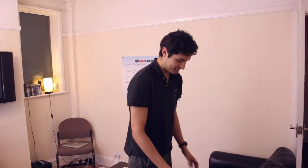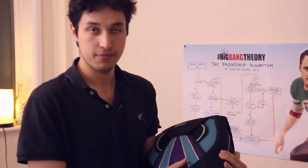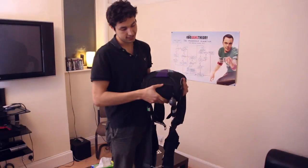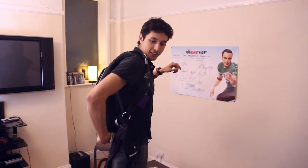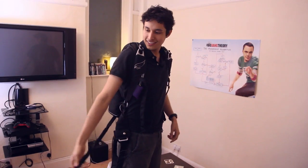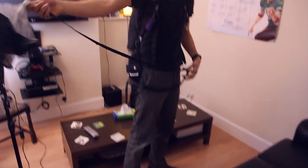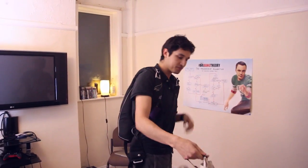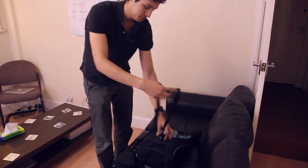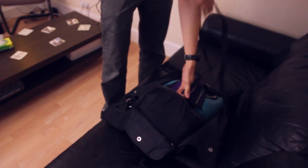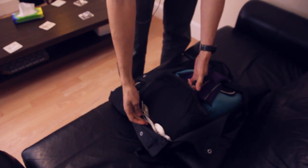So this is a skydiving rig. This is where the main parachute is and this is what's called the pilot chute. What you would do is grab it and throw it, so hopefully it catches air and it pulls this pin that then extracts the main canopy.